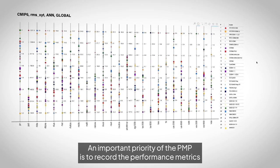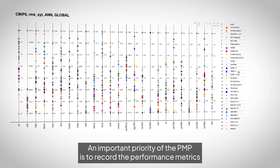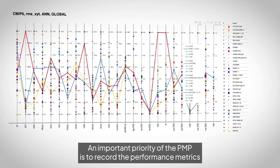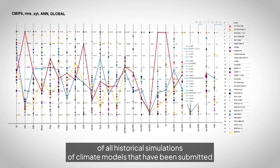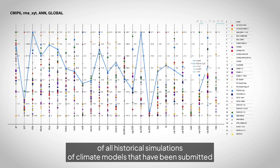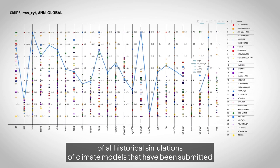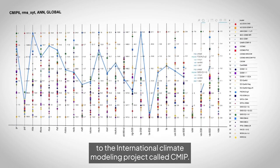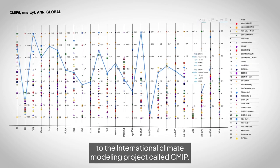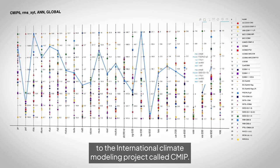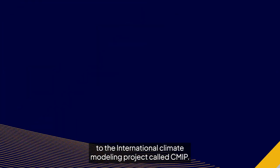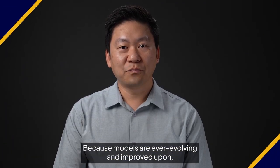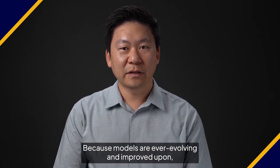An important priority of the PMP is to record the performance metrics of all historical simulations of climate models that have been submitted to the International Climate Modeling Project, called CMIP.